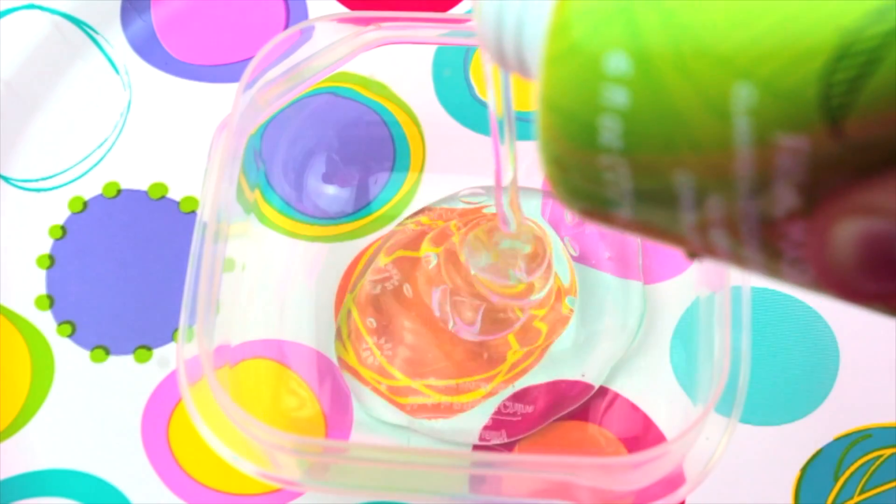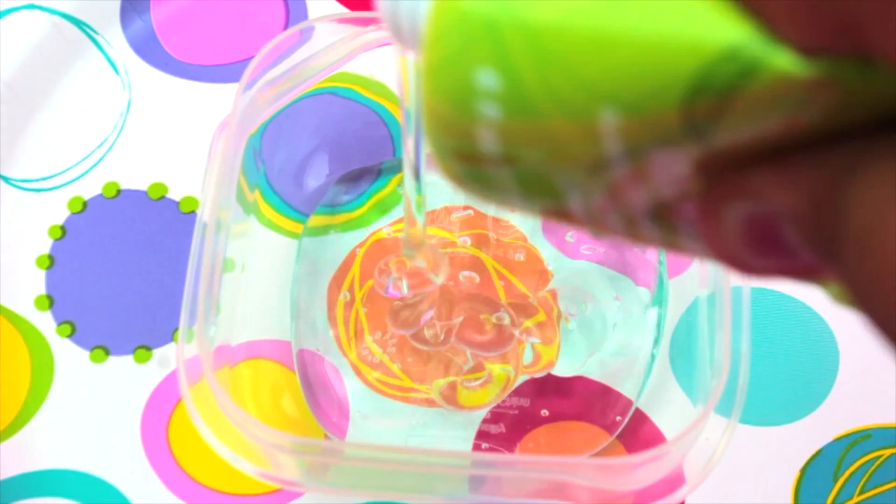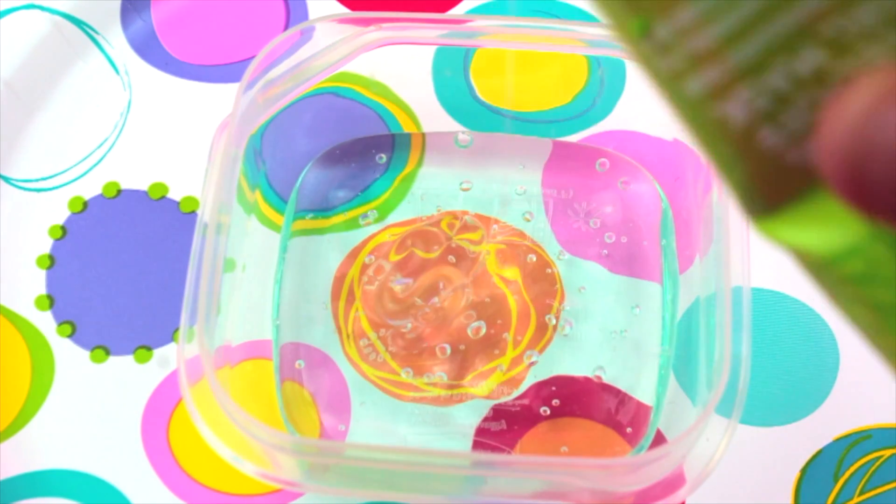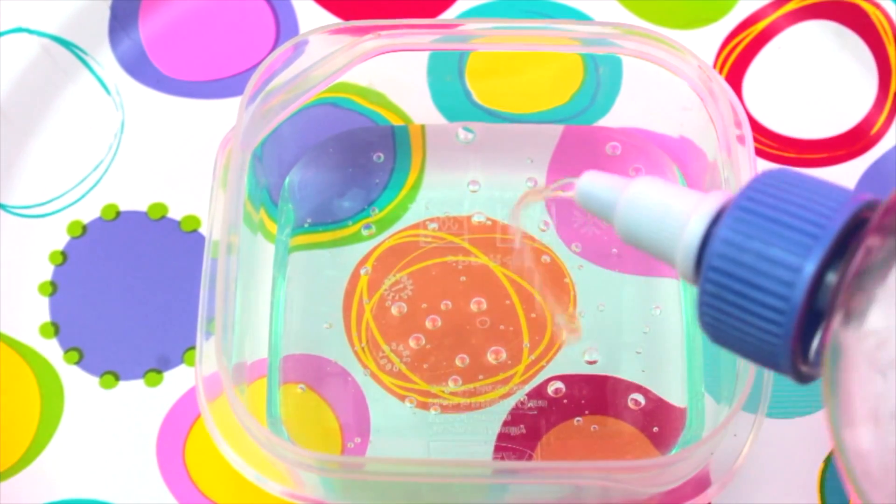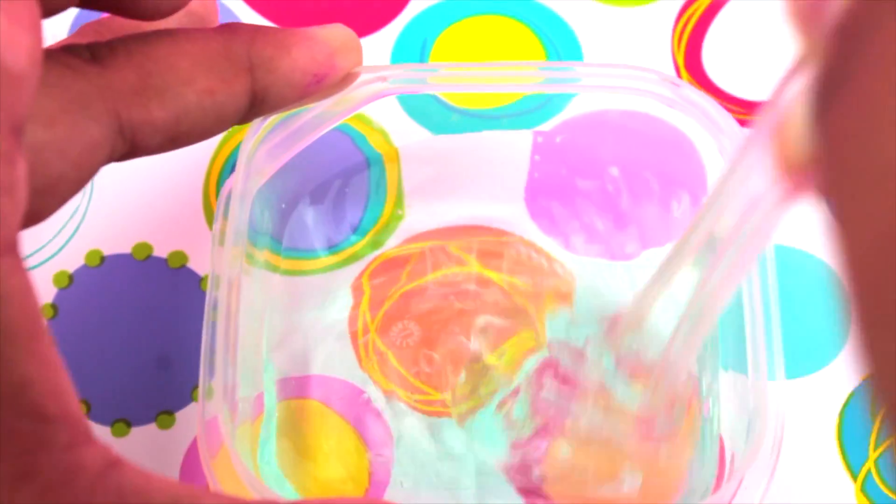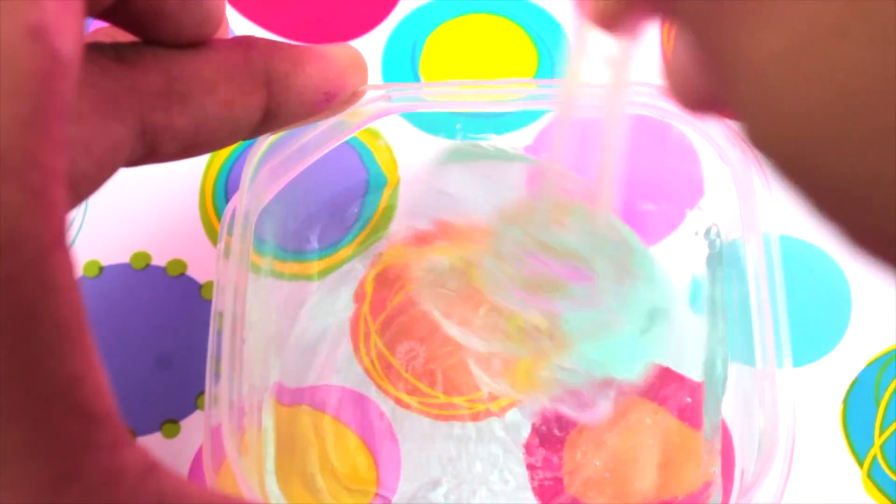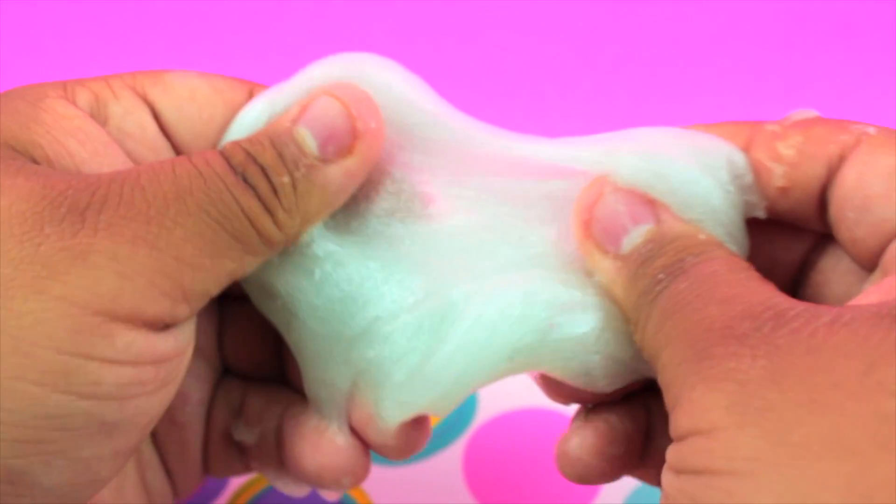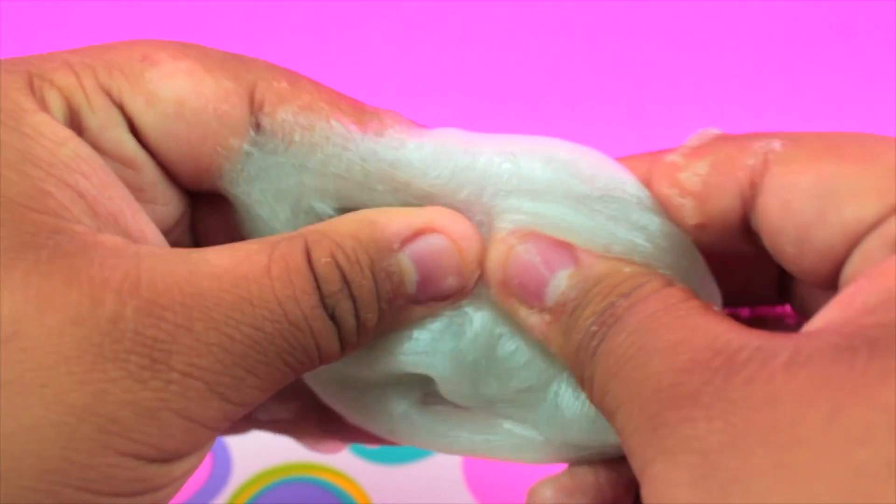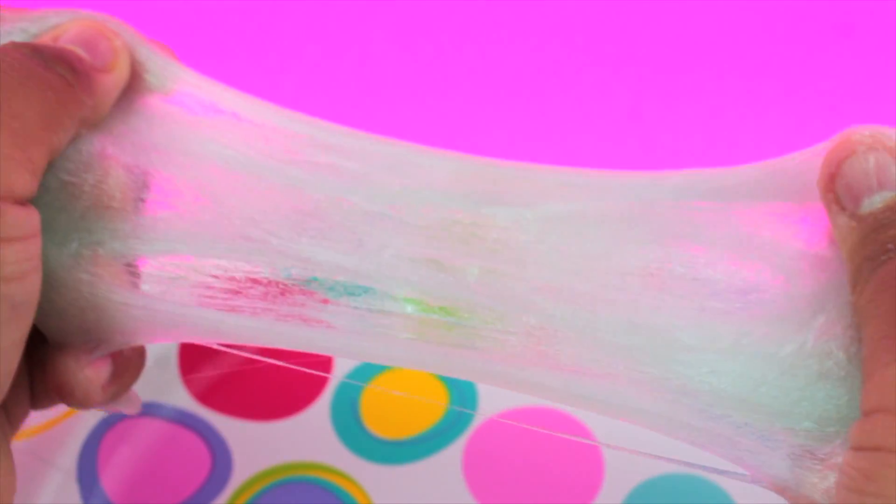Basically all I did is just dump my whole face mask into a container and then I just started adding my borax solution, or you can add contact lens solution with some baking soda, and then I just started mixing that together until it came into a slime. It's super cool and it smells super nice because my facial mask smells like cucumbers. And now you can color it and that's basically it for this experiment.